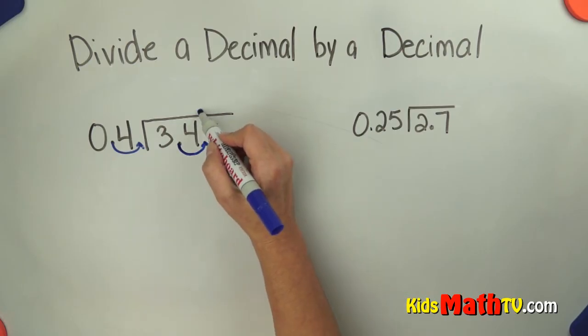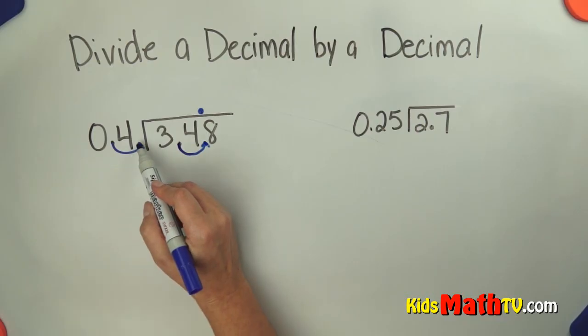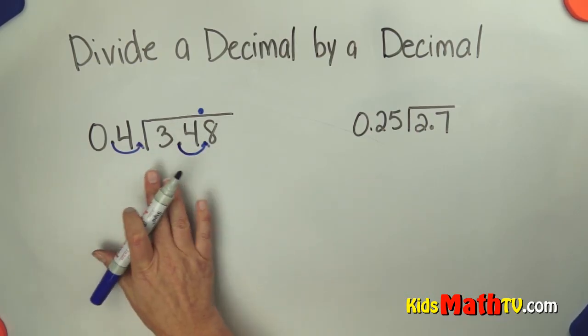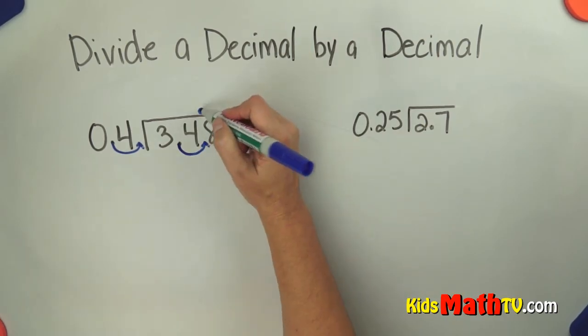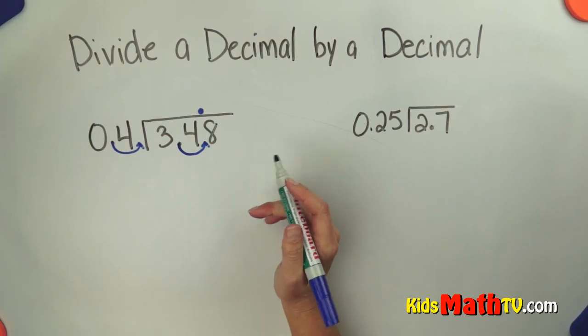It is now here and the decimal comes straight up. So move my decimal over one place. Move my decimal over one place in both the divisor and the dividend. Then bring the decimal straight up. And now I get to divide and I don't have to worry about the decimal anymore.